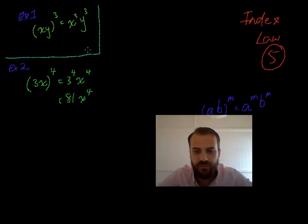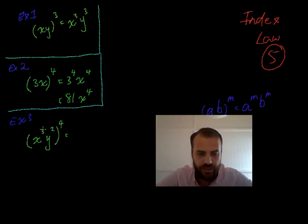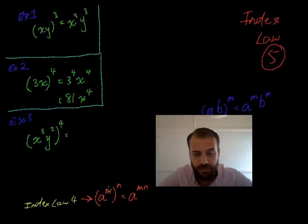So, two straightforward examples for index law 5, but we can actually combine index law 5 with index law 4 to do far more interesting stuff. So, x cubed, y squared, all in brackets, to the power of 4. Now, we have to combine what we know about index law 5 with what we know about index law 4. Remember that index law 4 says A to the power of M, in brackets, to the power of N, equals A to the power of MN.